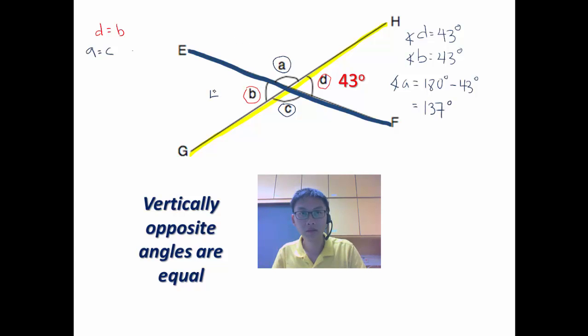So let me fill this all in, 137 degrees. So check. Yes, 137 is an obtuse angle. This looks obtuse to me. And if angle A is 137, then what is angle C? Angle C is also 137 because they are vertically opposite angles. So that's how you can use vertically opposite angles to help you find unknown angles. It's very easy.